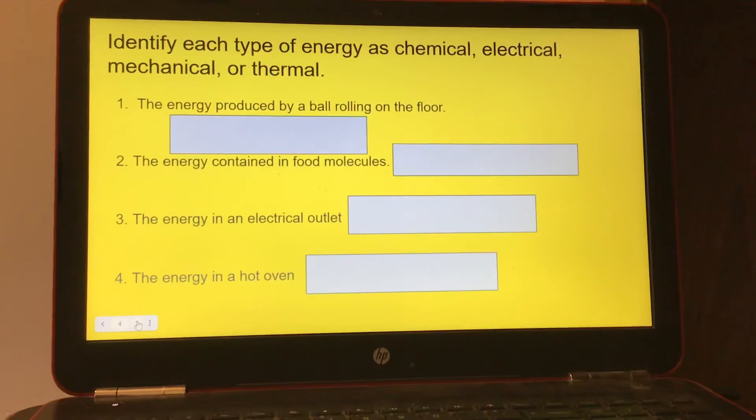Number one, the energy produced by a ball rolling on the floor. Number two, the energy contained in food molecules. Number three, the energy in an electrical outlet. And number four, the energy in a hot oven.